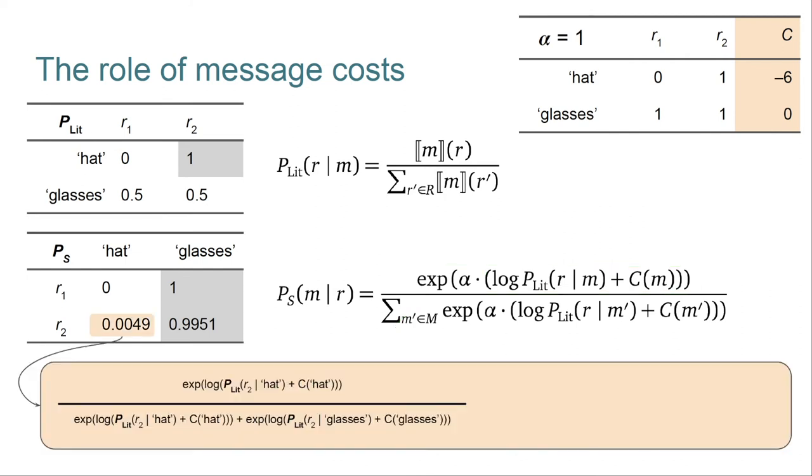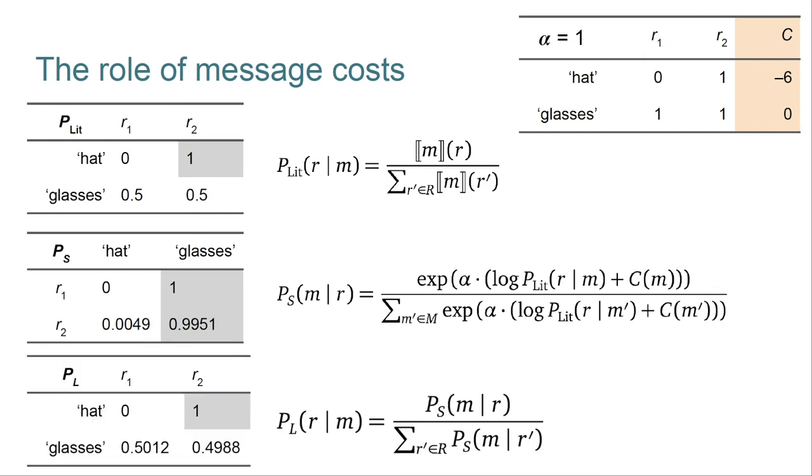So to derive the probability of hat given r2 in this game, we create this expression here in the orange box. As before, we look up the core P_lit values, but now we also fetch the costs. And then those get wrapped in the math that we just walked through with exp and log. After that, you should just let your calculator take over to derive the final value. From there, the pragmatic listener calculation is identical to the one that we did before with the simpler speaker. So I'll leave that aside.